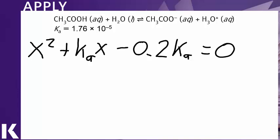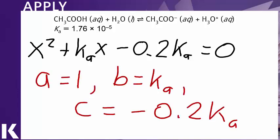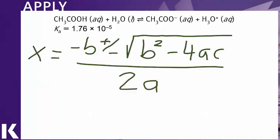And of course the reason that we set this all equal to 0 is because now we have a standard quadratic expression where the coefficient a is 1, the coefficient b is equal to the Ka, and the term c is minus 0.2 times the Ka. Once we've identified these specific terms in the quadratic expression, we can plug them into our good friend, the quadratic formula.